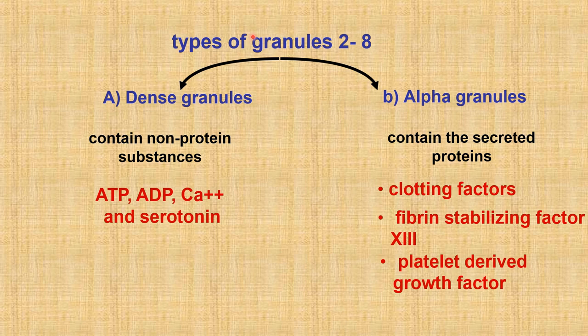Platelet granules are of two types: alpha granules and dense granules. Alpha granules are abundant — about 50 to 80 granules per platelet — approximately 200 nanometers in diameter, containing secreted proteins such as clotting factors, fibrin-stabilizing factor 13, and platelet-derived growth factor. Dense granules are about 3 to 8 per platelet, also called dense bodies, smaller in diameter, and contain non-protein substances like serotonin, ADP, ATP, and calcium.